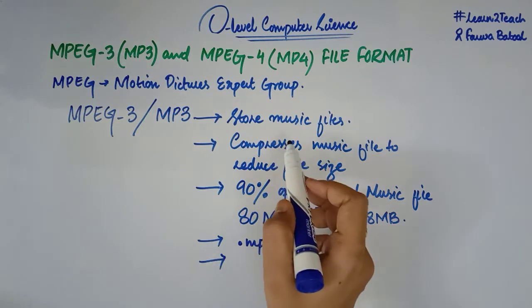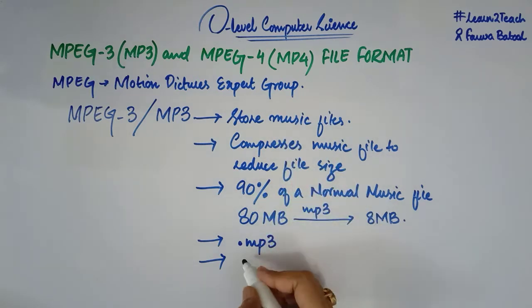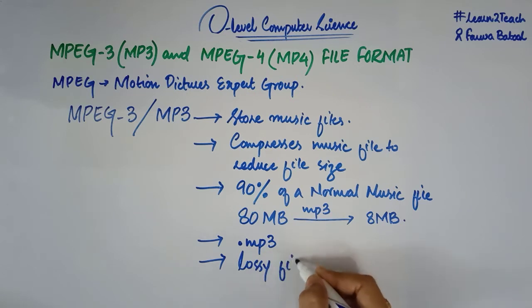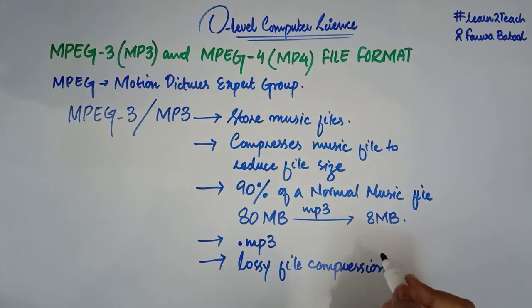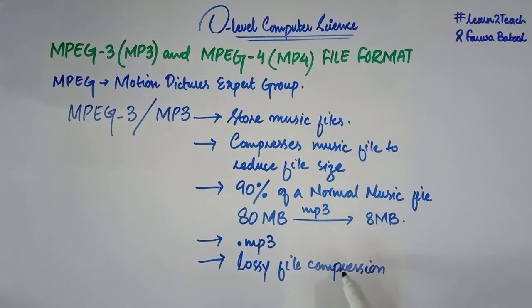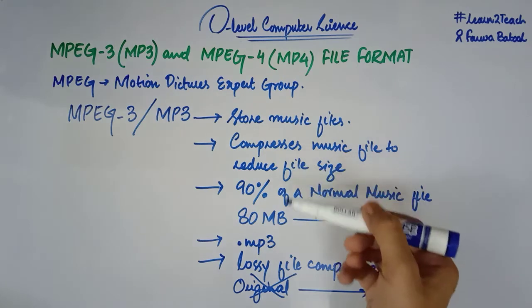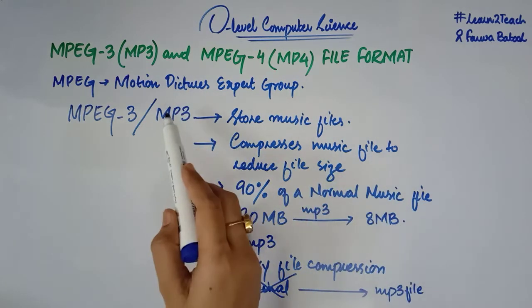In order to compress the MP3 files, we go through lossy file compression. It means that the original file that is being converted into MP3 file can never be recovered. It has been lost. So in lossy file compression, the original file is lost and you are having another file, that is MP3 file in a compressed form.